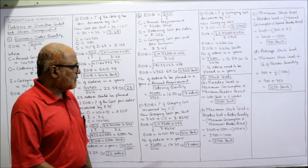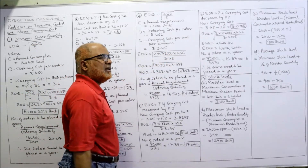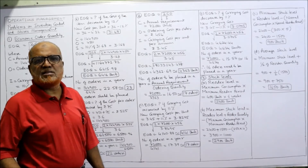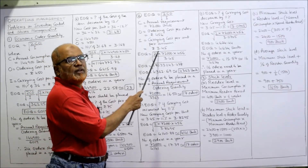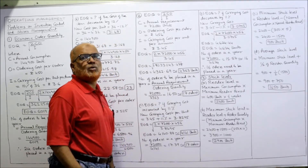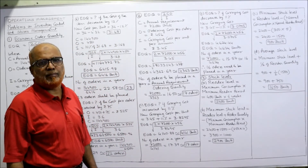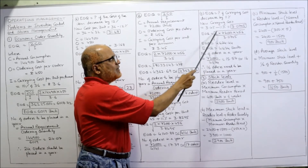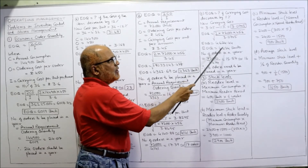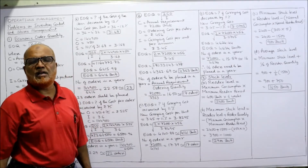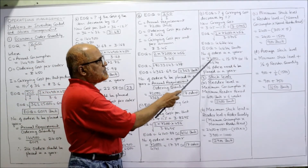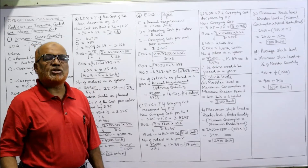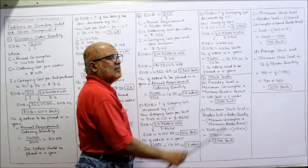Now EOQ if carrying cost decreases by 11%: old carrying cost 3.45 minus 11% gives 3.45 − 0.3795 = 3.0705. This is the new carrying cost per unit. Substituting: √(2 × 72,000 × 456 / 3.0705) = 4624.44, rounded off to 4624 units. Number of orders = 72,000 ÷ 4624 = 15.57, rounded off to 16 orders per year.